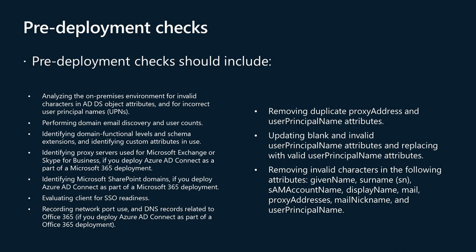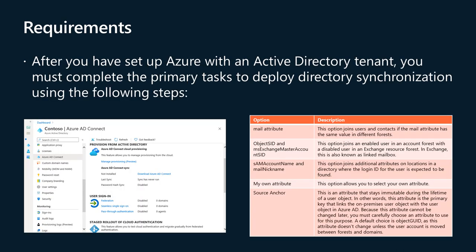After setting up Azure with an Active Directory tenant, the primary tasks to deploy directory synchronization are: add your ADDS domain into Azure, verify the domain, and set it as the primary domain; download and install Azure AD Connect; run the Azure AD Connect configuration wizard. As an option, you can configure Azure AD Connect to synchronize specific OUs in the on-premises ADDS environment. Enable optional features such as password hash sync, password write-back, and Exchange hybrid deployment. Run Azure AD Connect and let it configure the environment for directory synchronization. Validate the synchronization results. After setup and initial synchronization, you can reconfigure synchronization options if needed.